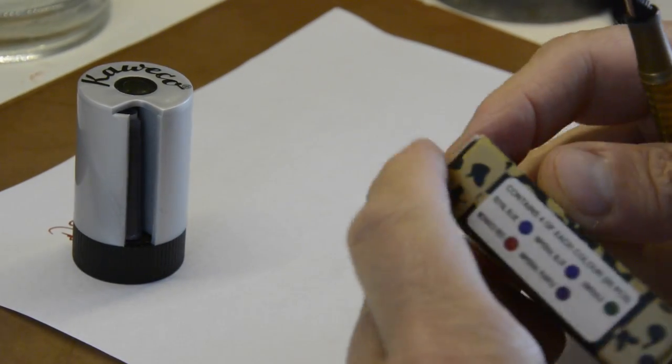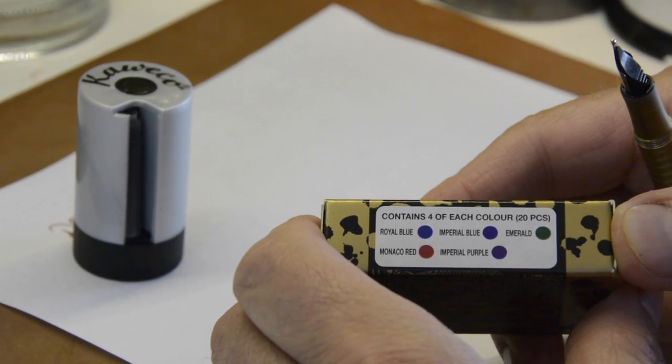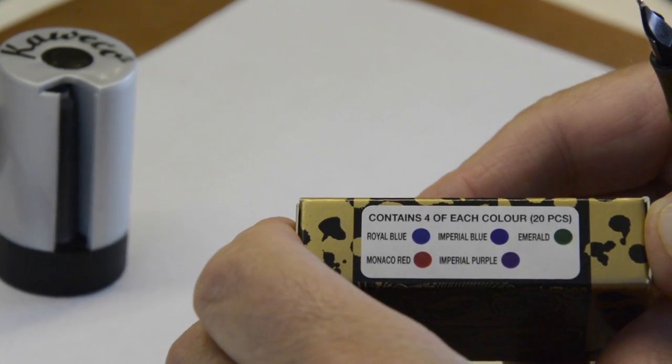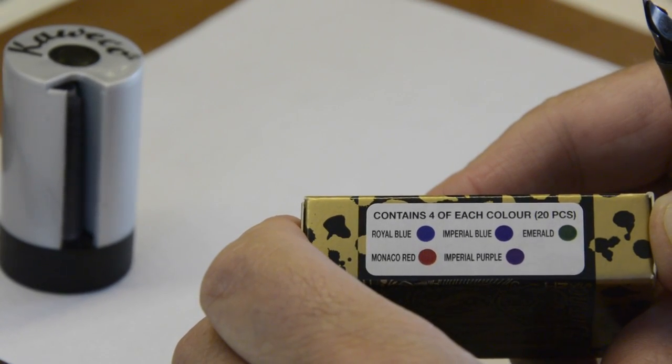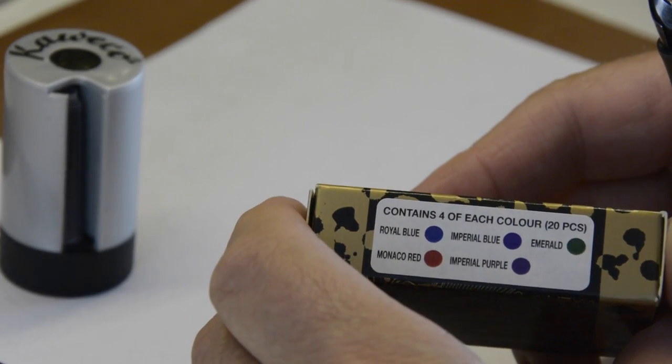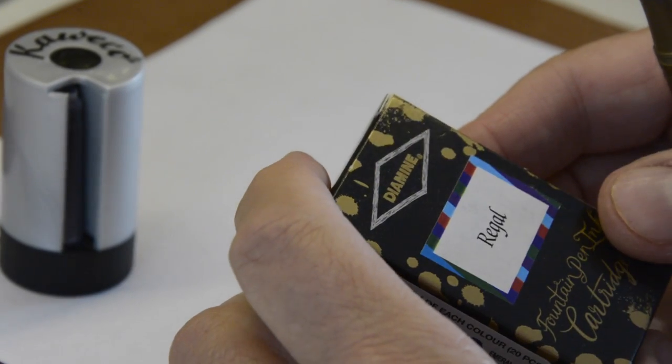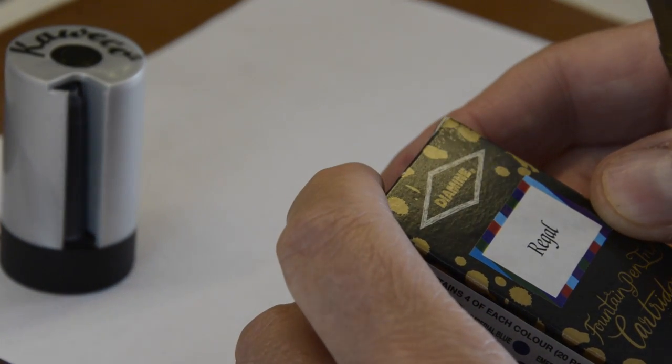I have taken some Diamine inks, and this one, as you can see, there is Royal Blue, Imperial Blue, Emerald, Imperial Purple, and Monaco Red, which is a really delightful mixture of inks that I carry, because I find it's really useful to change ink color regularly.